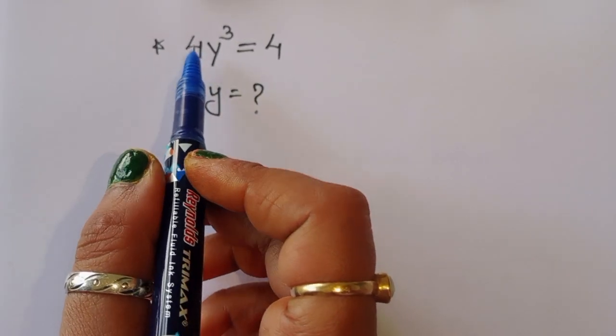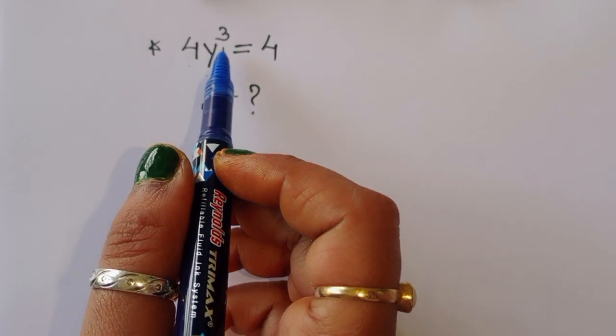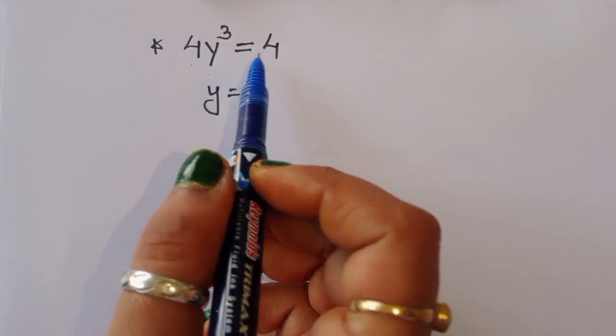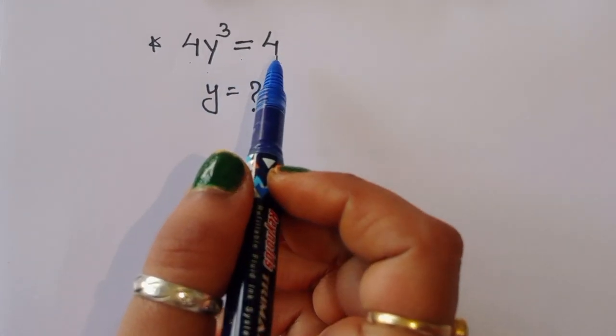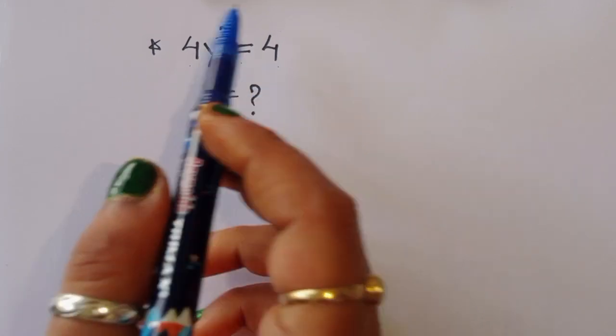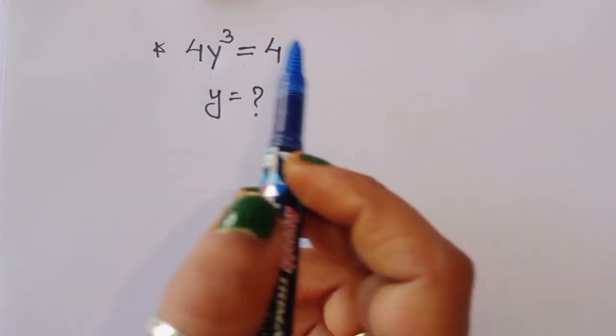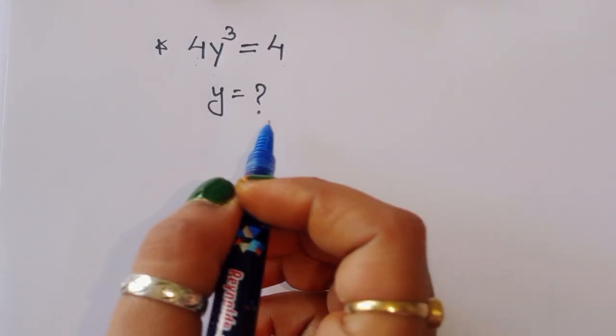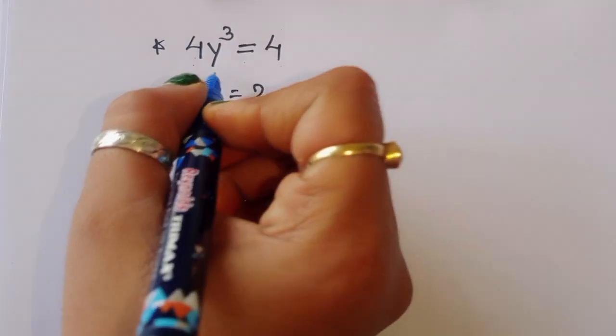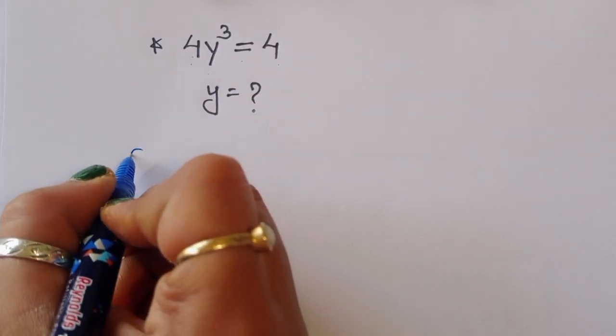The question is: given 4y³ = 4, we have to find out the value of y. Let's see the solution — how we can find out the value of y.